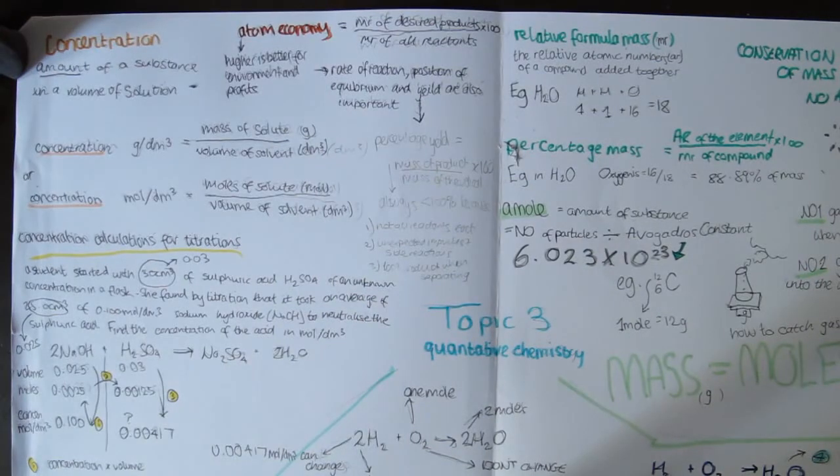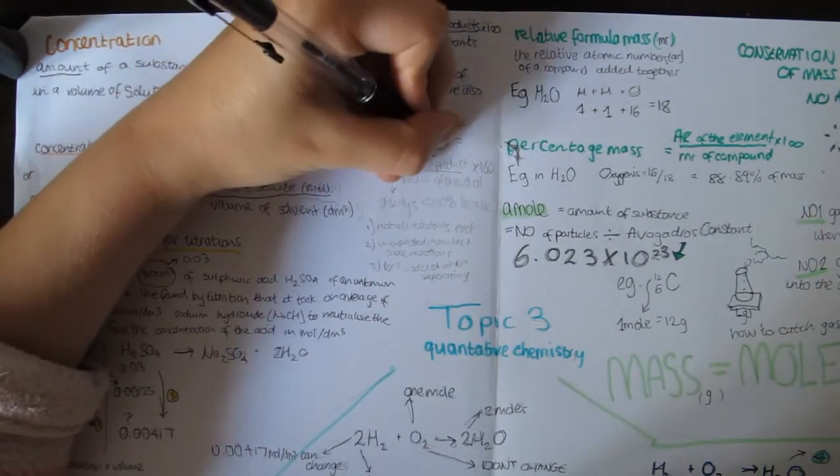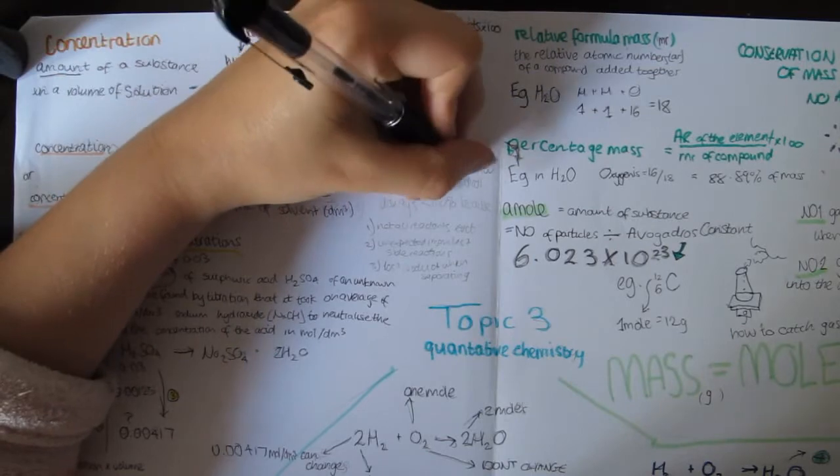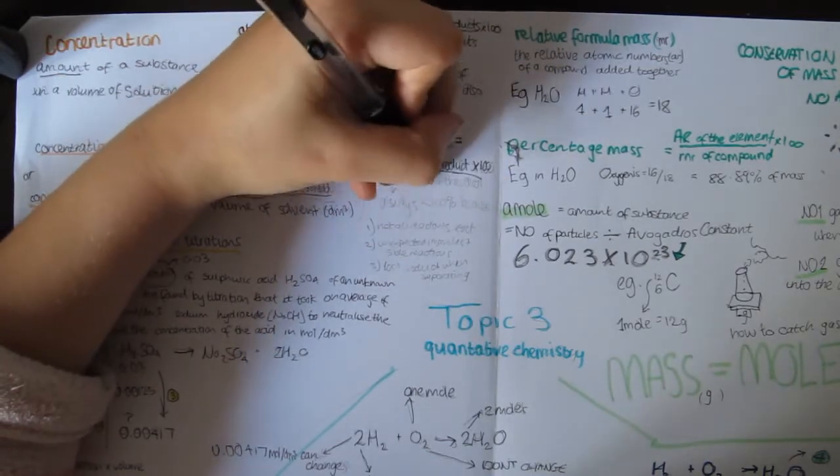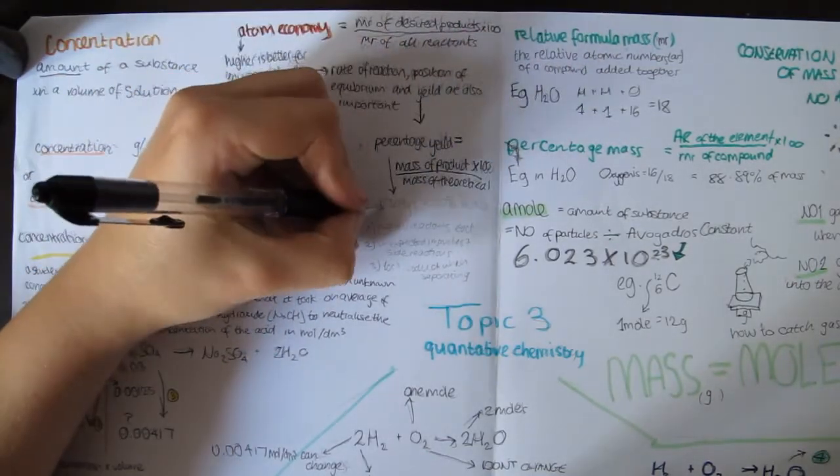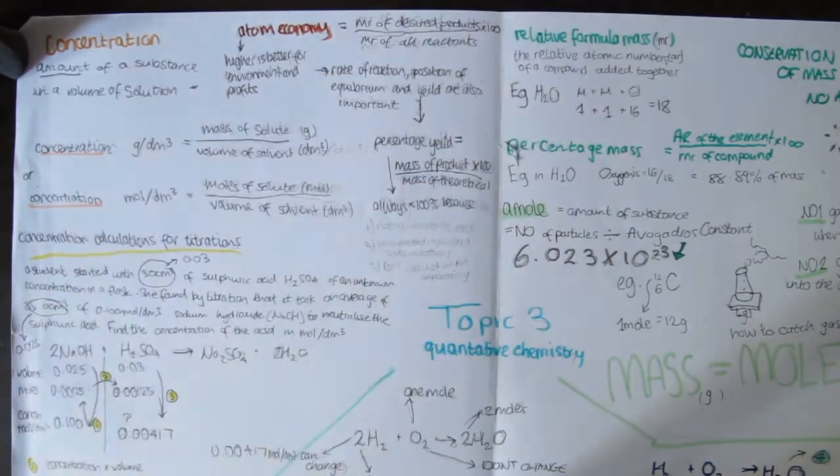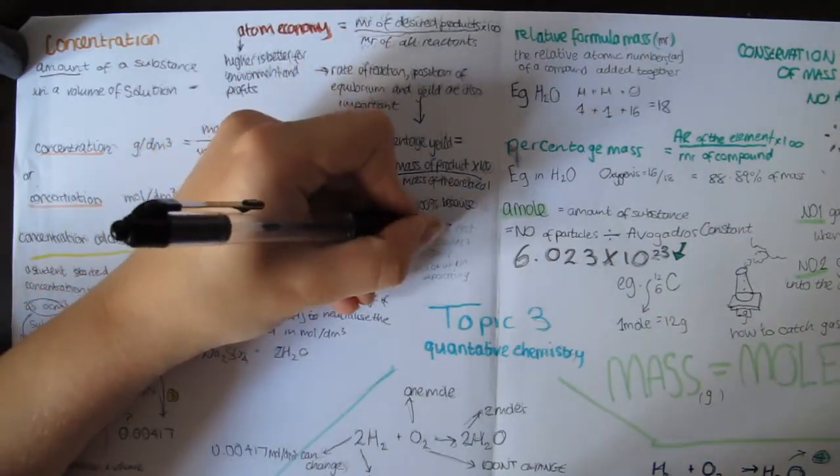Percentage yield shows the actual yield as a percentage of the theoretical yield. It can be found by the equation: Mass of product divided by mass of theoretical product times 100. The higher the percentage yield, the more efficient the reaction, the less it costs and the less waste it produces.